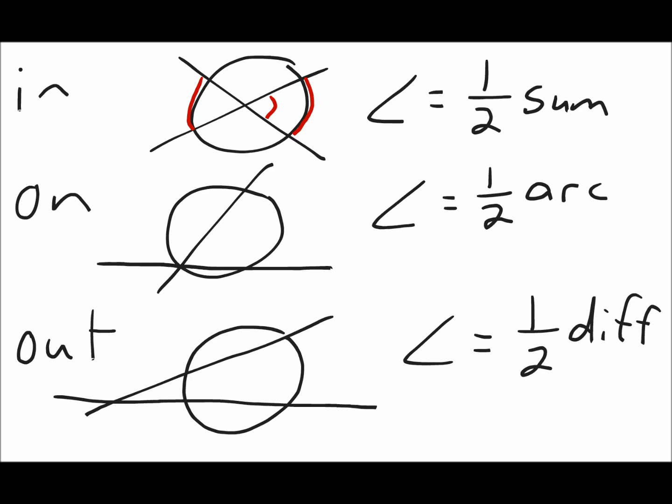If the intersection is on the circle, the angle formed is half of the one arc that the angle opens up to. When the intersection is outside the circle, the angle formed is half of the difference of the arcs — take the big one, subtract the little one, and take half of that. So: inside, the angle is half the sum of the arcs; on the circle, the angle is half of the one arc; and outside, the angle is half the difference of the arcs.